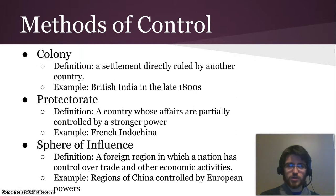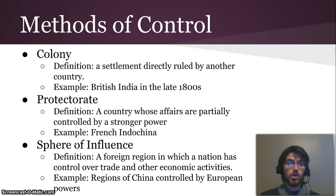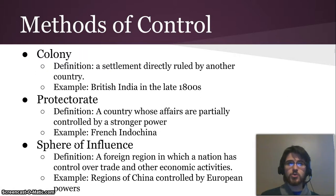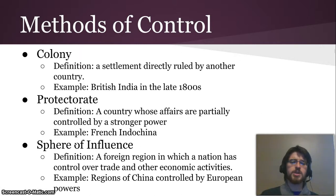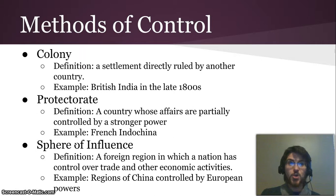Here are the different kinds of control that Europe would have over these places. As a controlled place, you might be a colony — a settlement directly ruled by another country. A good example is British India in the late 1800s, where Britain had total political, economic, and military control over the majority of India. A protectorate is a country whose affairs are partially controlled by a stronger power, often with a local ruler in place — a good example being French Indochina. Spheres of influence were a foreign region where a nation had control over trade and other economic activities, like in China, where European countries set up small areas where they could trade and China didn't have control over its own trade in those areas.